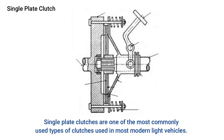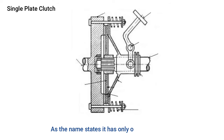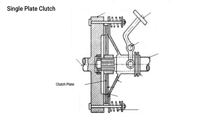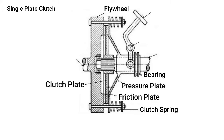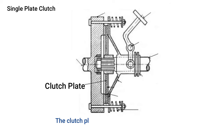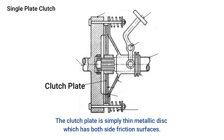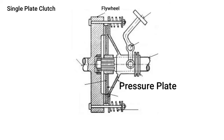The single plate clutch is one of the most commonly used types and is used in most modern light vehicles. The clutch helps to transmit torque from the engine to the transmission input shaft. As the name states, it has only one clutch plate. It consists of a clutch plate, friction plate, pressure plate, flywheel, bearings, clutch spring, and nut-bolt arrangement. The clutch plate is a thin metallic disc with friction surfaces on both sides.